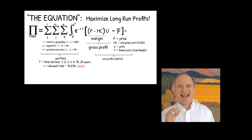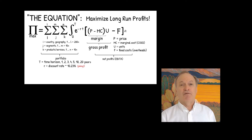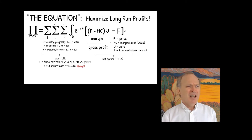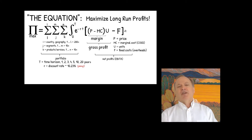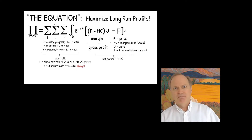My brother Jay is an anesthesiologist who always says business is trivial. And he's right — you've got to sell to somebody, somewhere, something: that's the portfolio. And you've got to buy low, sell high, but don't spend too much money doing it. If that was the only thing to worry about, the optimal price would be infinite, optimal marginal cost would be zero, and optimal fixed cost would be zero. Selling oxygen to everyone everywhere at an infinite price is a killer business model — the only problem is there's interaction between these terms.